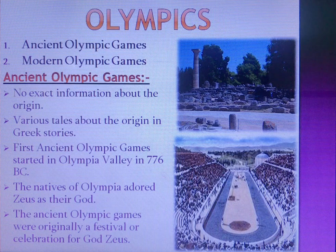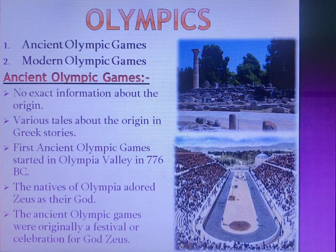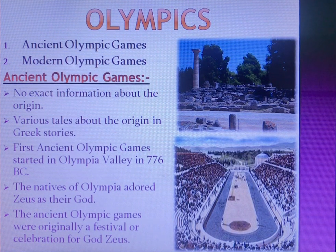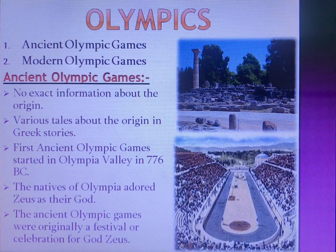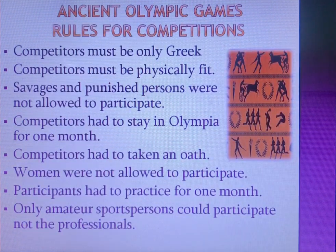It is believed that the people of Olympia adored Zeus as their God. Once Zeus appeared on the ground of Olympia, people started to give offerings and sacrifices, and the son of God Zeus started games and sports in honor of his father. The Ancient Olympic Games were originally a festival — a celebration of the gods. There are different stories about the origin of Ancient Olympic Games.